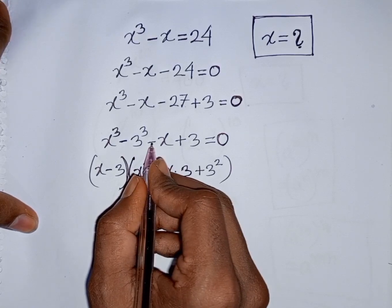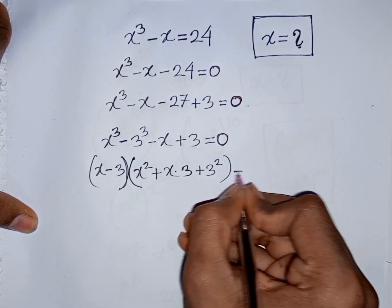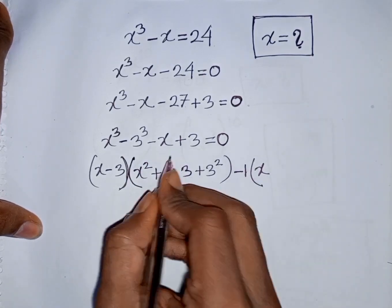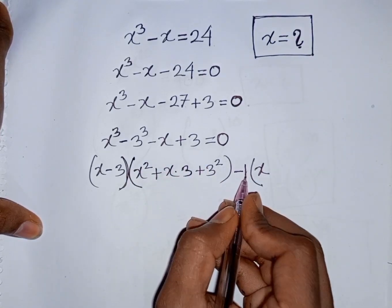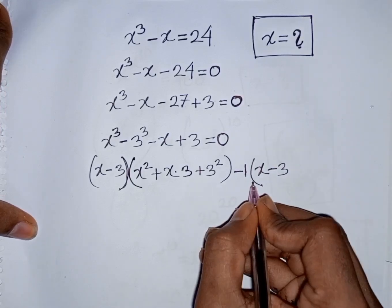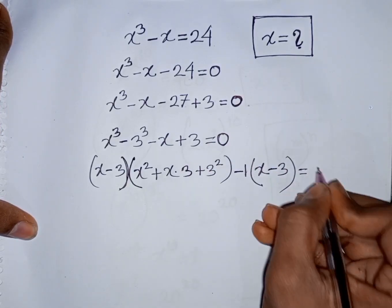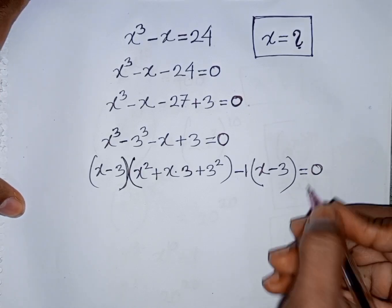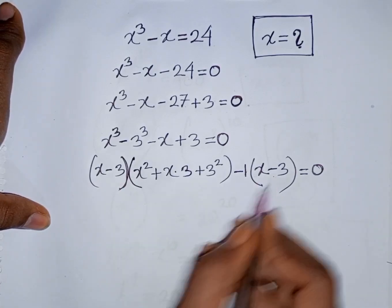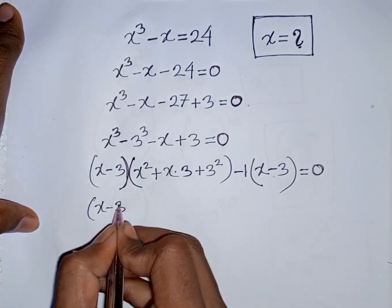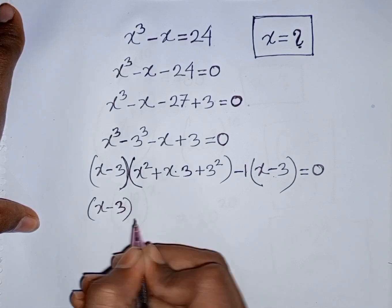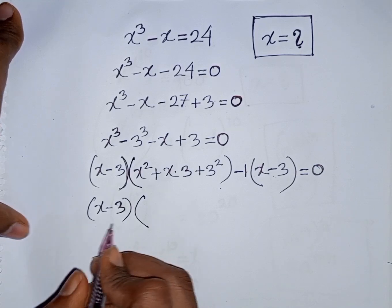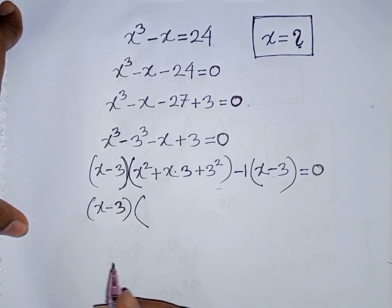From here we take common minus 1. So minus 1 is out of the bracket. This divided by this means it will be x, then plus 3 divided by minus 1 means it will be minus 3, bracket close, equal to 0. Now we take common x minus 3, so bracket x minus 3 is out of the bracket, and x minus 3 will be cancelled.